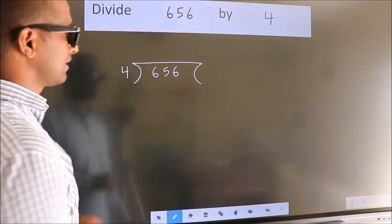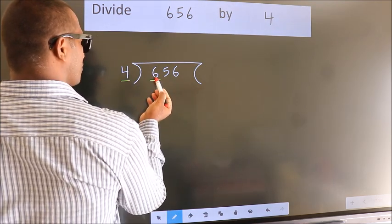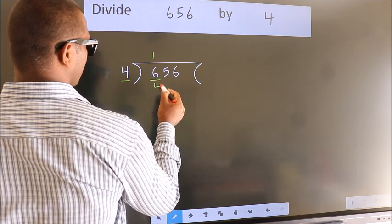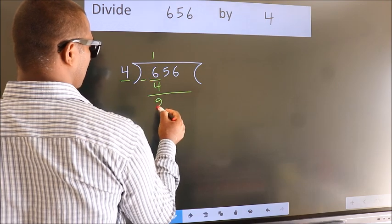Next, here we have 6, here 4. A number close to 6 in the 4 table is 4 once 4. Now we should subtract. We get 2.